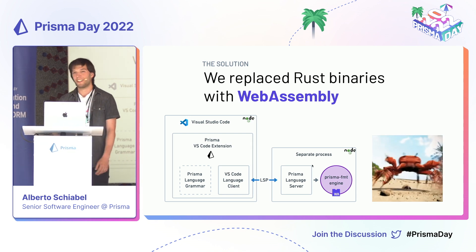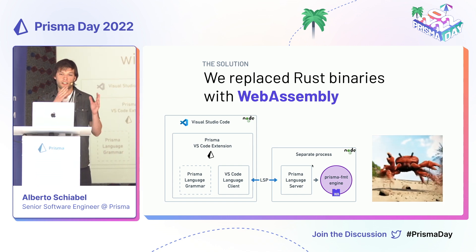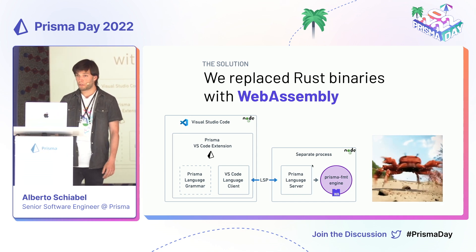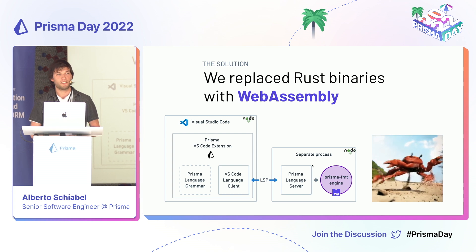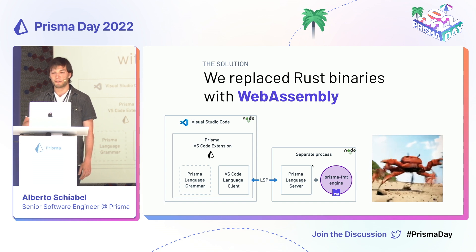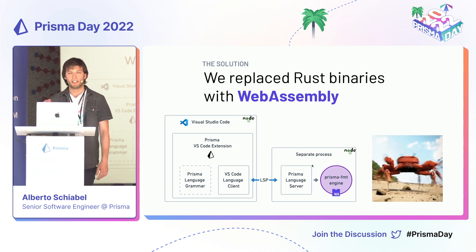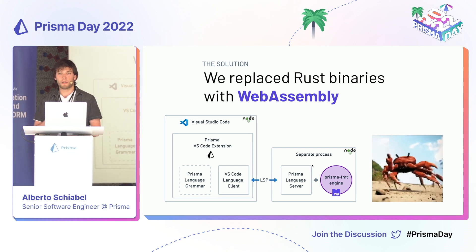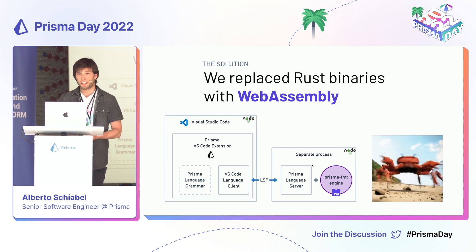Enter WebAssembly. What we did was take the formatter in Rust and, rather than compiling that to a binary, we compiled it to a single cross-platform WASM artifact that can be loaded by the Node.js platform at runtime as any other Node module. We used that in the backend for our schema language server, and it just works. This allows us to get rid of a whole class of potential errors that come from downloading binaries, because downloads can fail in pretty creative ways — especially for a Prisma extension used by so many developers.